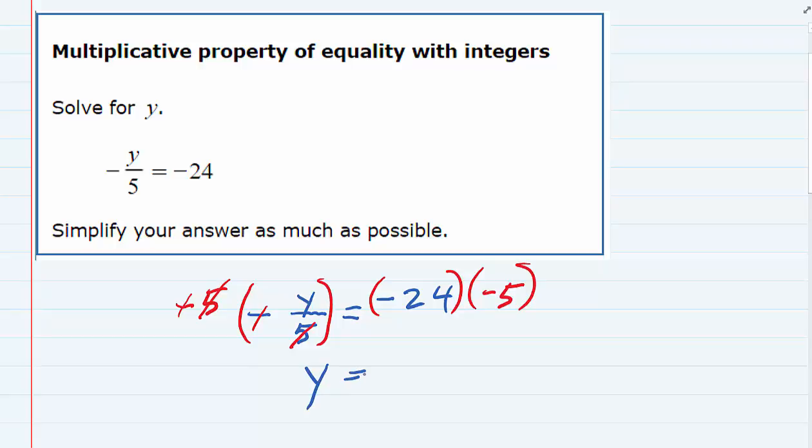And then on the right-hand side, I just need to multiply those two numbers. So I've got a negative 24 times a negative 5, a negative times a negative is a positive, 24 times 5, 120.